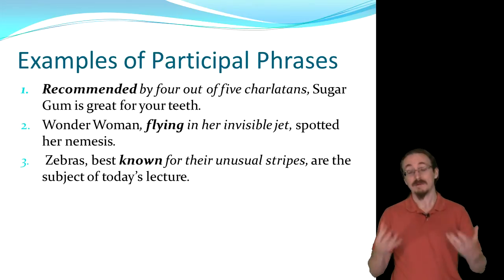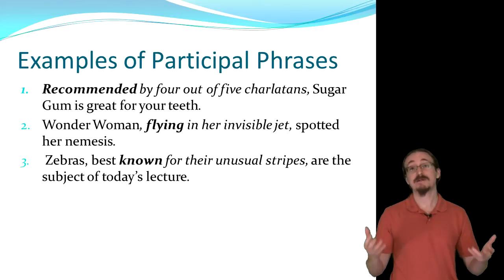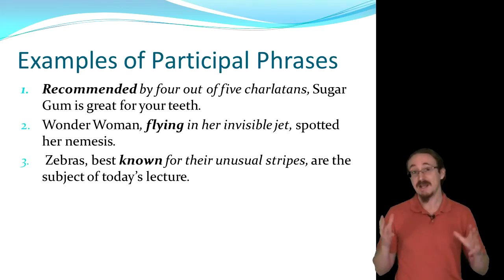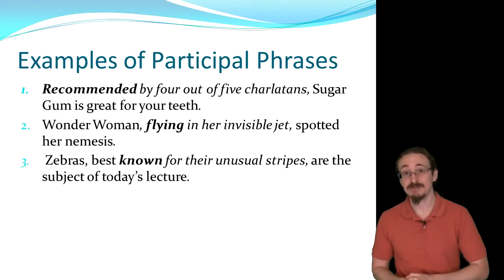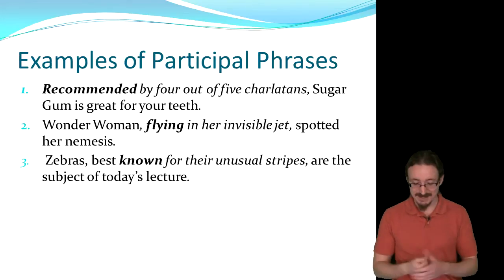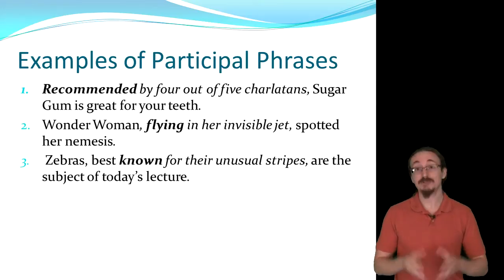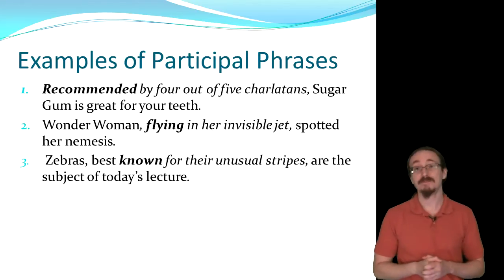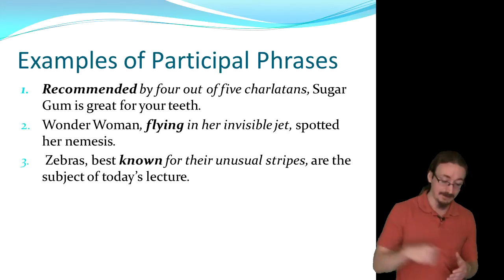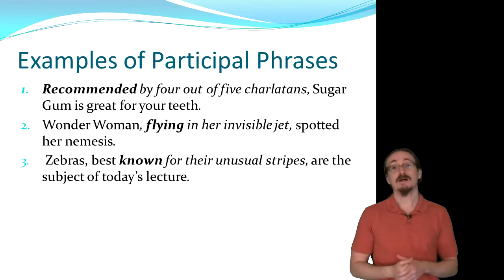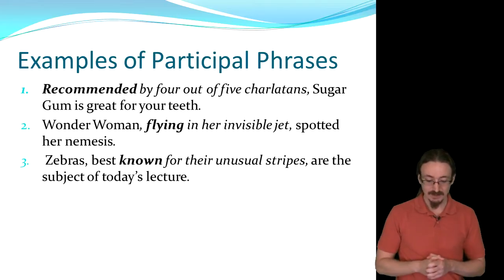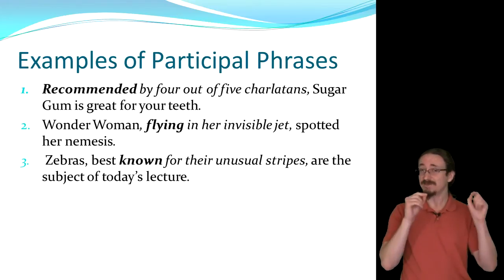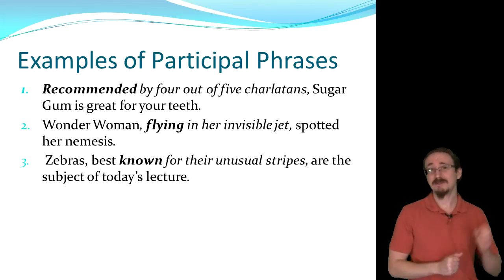'Wonder Woman, flying in her invisible jet, spotted her nemesis.' Flying is normally a verb, but here we're using it as an adjective describing Wonder Woman. 'Zebras, best known for their unusual stripes, are the subject of today's lecture.' The verb know has been changed to the participle known — best known for their unusual stripes is describing zebras. Notice that a lot of these have commas around them; if you take those commas out, it would be a run-on or fused sentence. You can often tell when you need a comma just by reading it out loud and hearing those pauses.